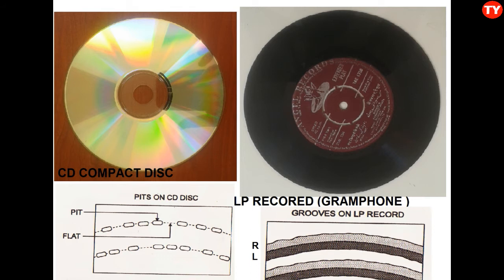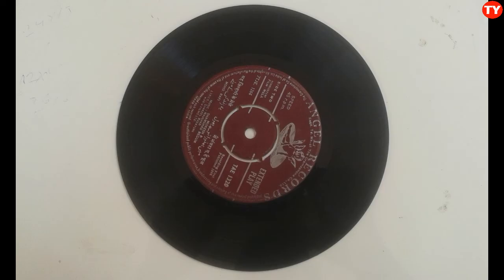In CDs, there is no direct contact between the reading mechanism and the disc surface. In gramophone records, there is constant movement of the pickup needle against the record surface. Because of this, there is no wear and tear in a CD.